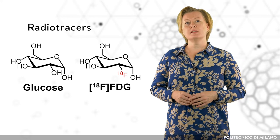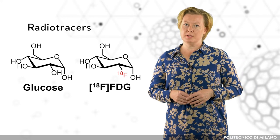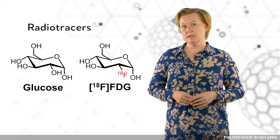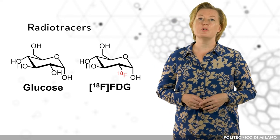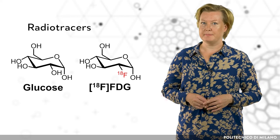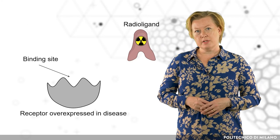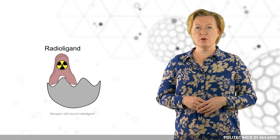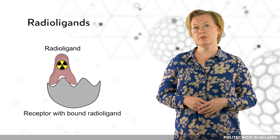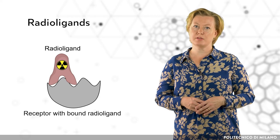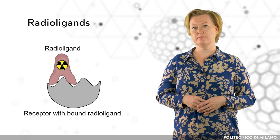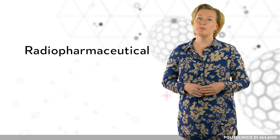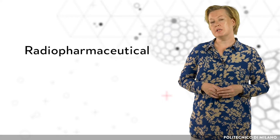An example of this is the study of glucose in the body. Glucose labeled with radioactive fluorine-18 can be used to trace the level of glucose metabolism in the body. A subset of radiotracers work by binding to receptors in the body — they are known as radioligands and they can help to determine, for example, overexpression of disease markers. The radiolabeled compound ready to be injected into the patient is called a radiopharmaceutical.